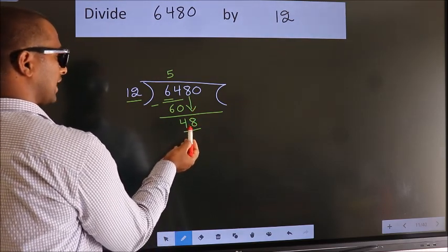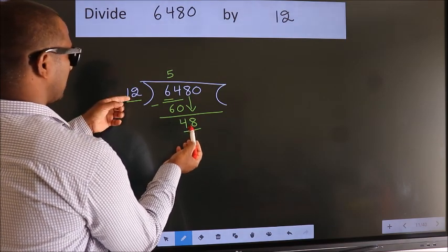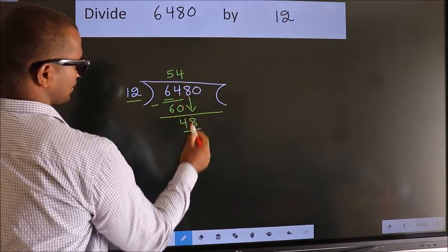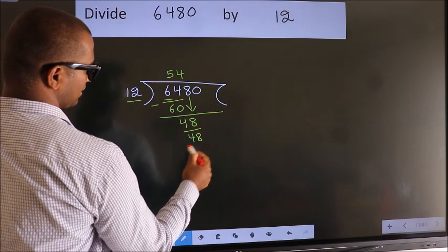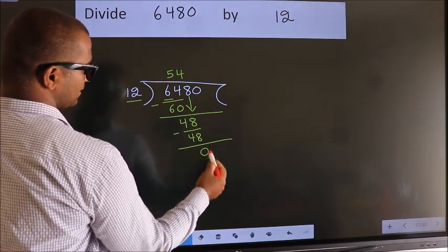A number close to 48. When do we get 48 in the 12 table? 12 fours, 48. Now we subtract. We get 0.